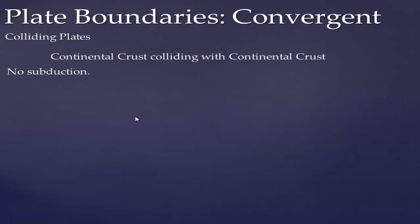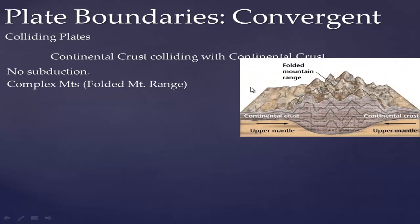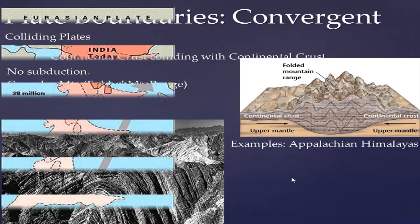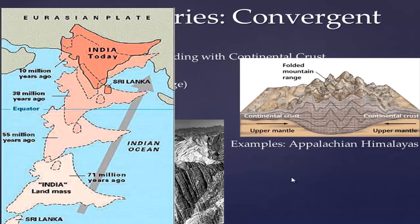Continental-versus-continental convergence is different — there's no subduction because continental crust is too buoyant and low in density to be pushed down. Instead it forms a complex or folded mountain range. The Appalachian Mountains are a great example of two small continents colliding. The Himalayas are an even better example: when India smashed into the Eurasian plate it formed the Himalayan Mountains and is still forming them. We can actually measure the Himalayas growing a few centimeters per year because India is still pushing into the Eurasian plate.